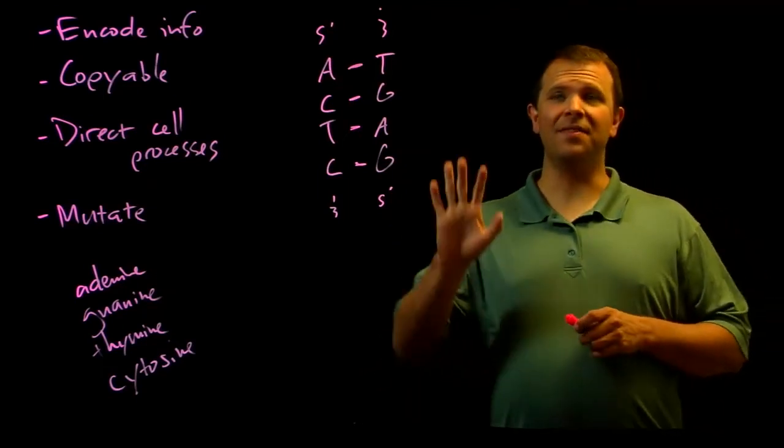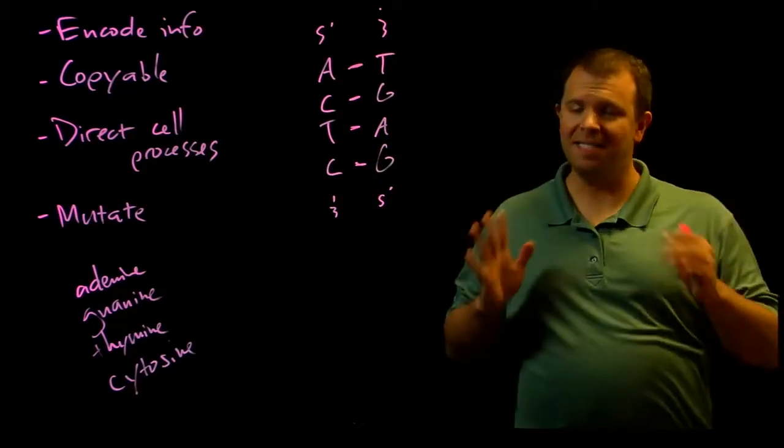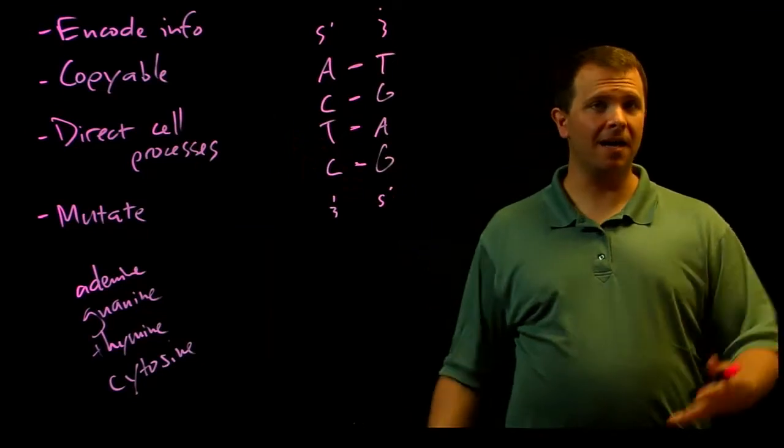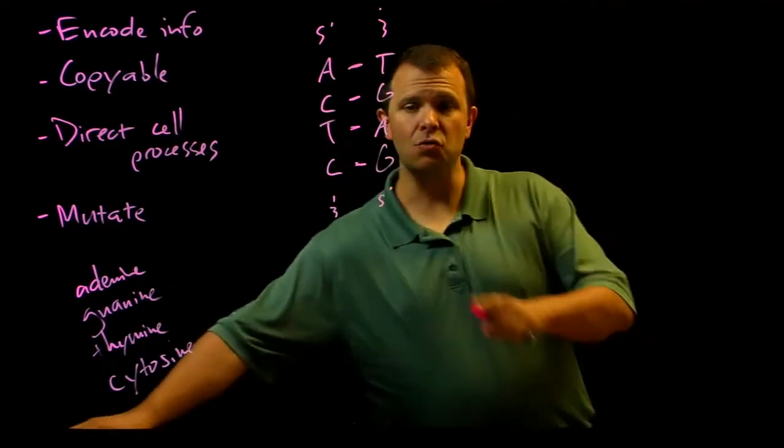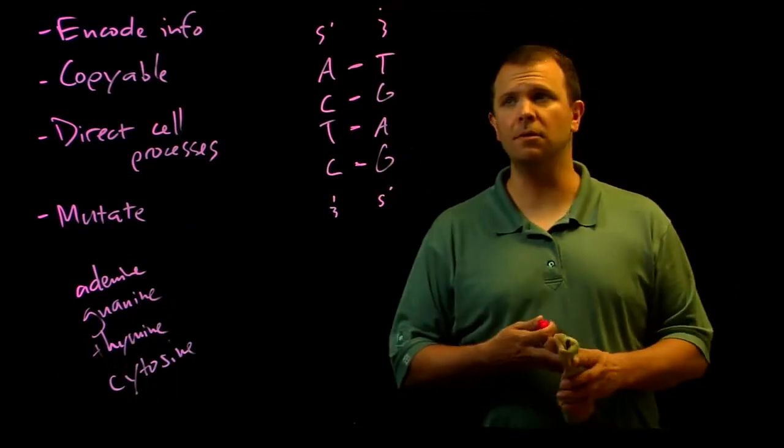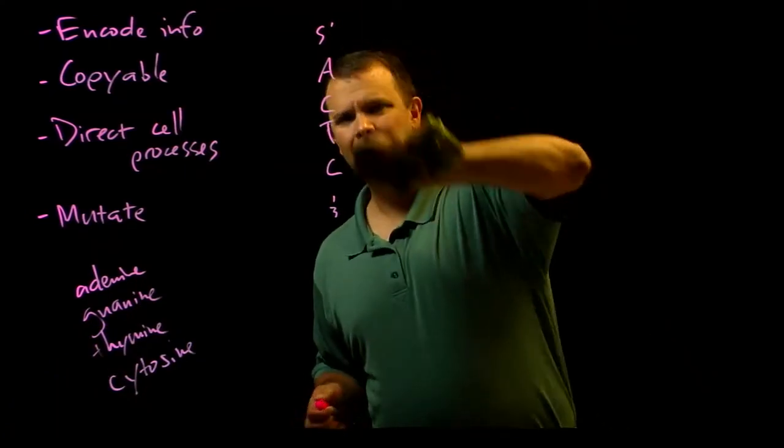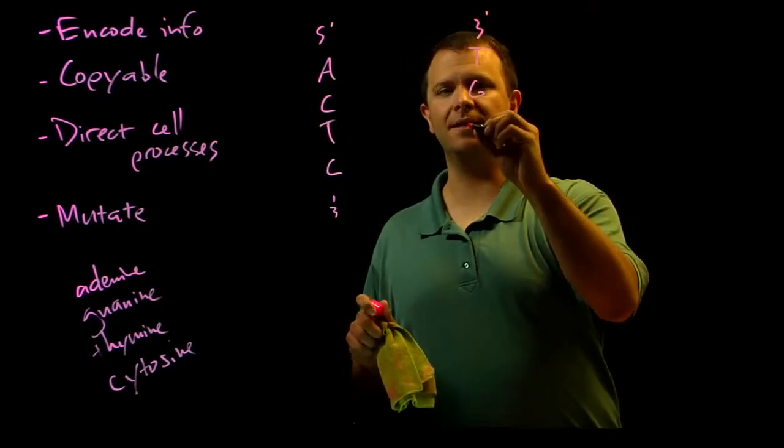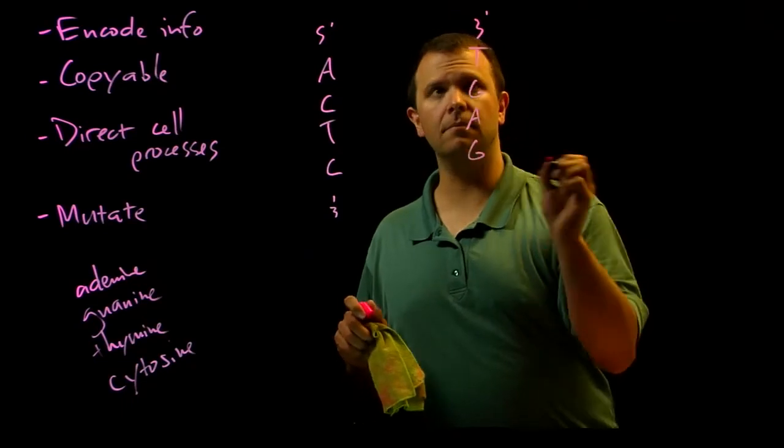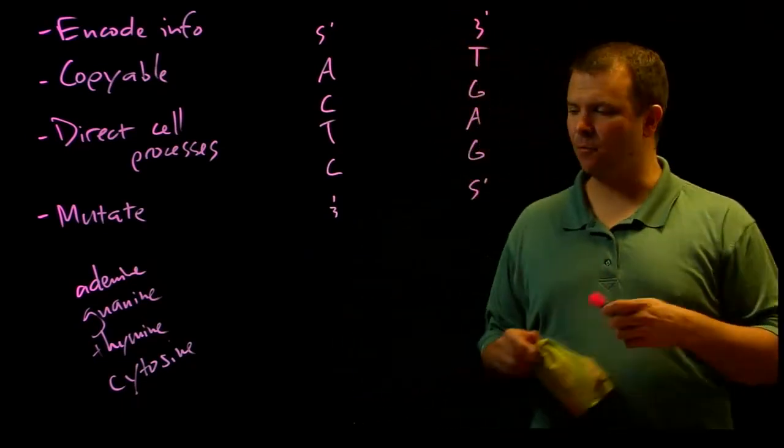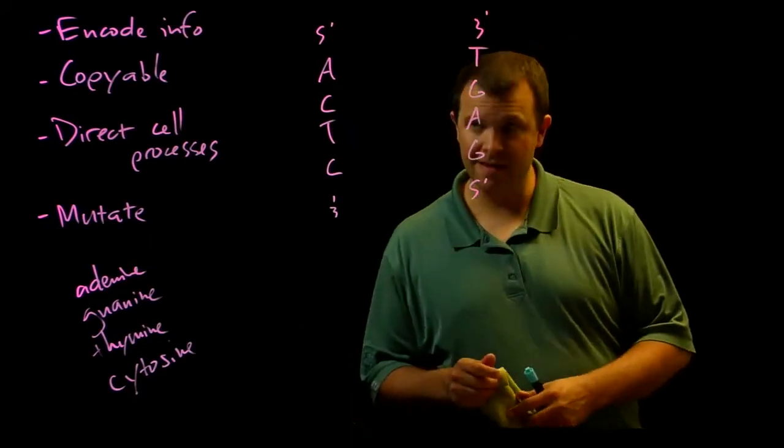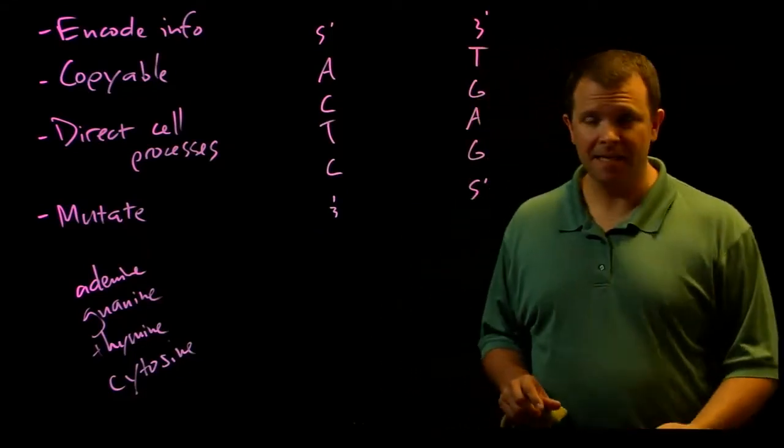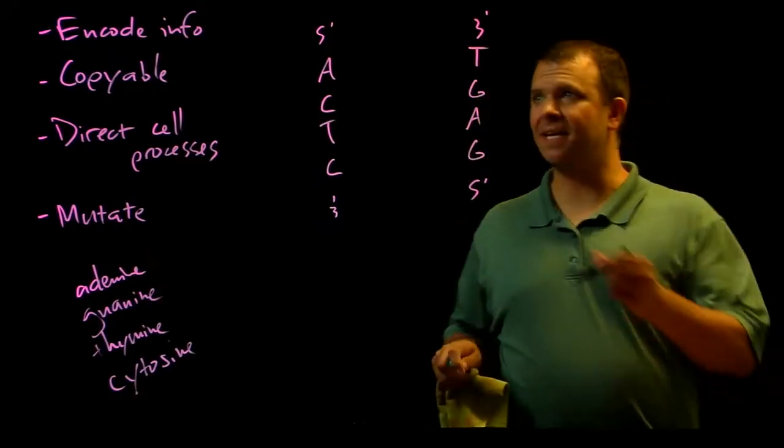And second, this kind of double-stranded Watson-Crick base pair structure addresses how you can go about copying it because you can copy this molecule by unzipping it. And so if I unzip it and now the other side of the molecule is over here, because of that Watson and Crick base pairing scheme, each of these two strands can now serve as a template for the other strand to be synthesized.